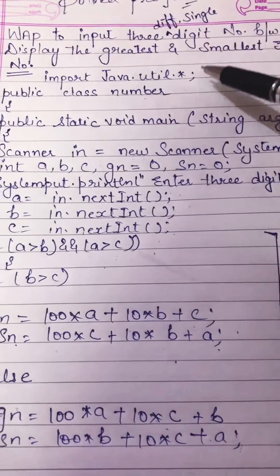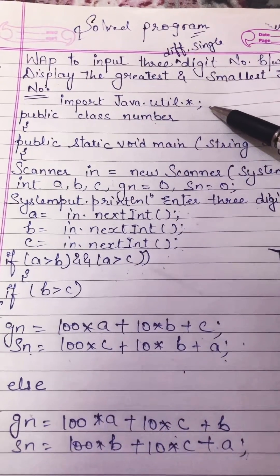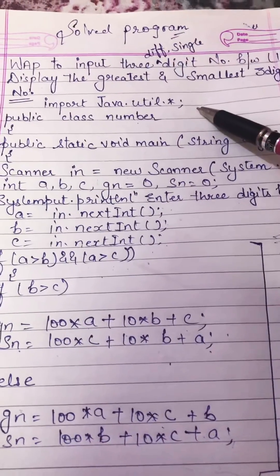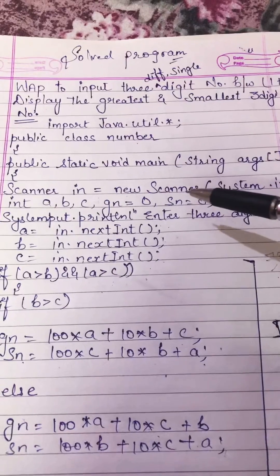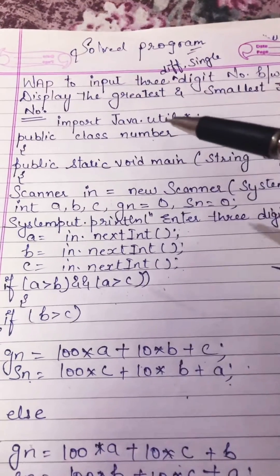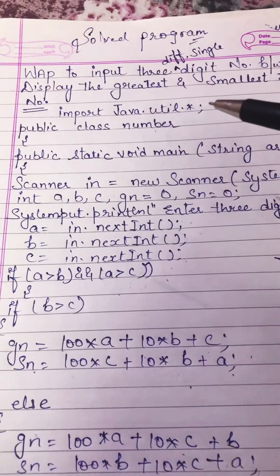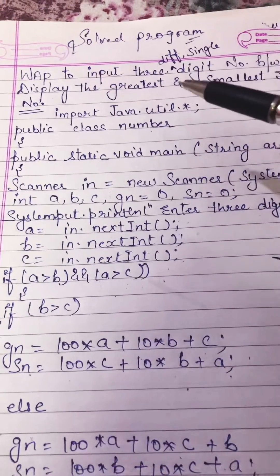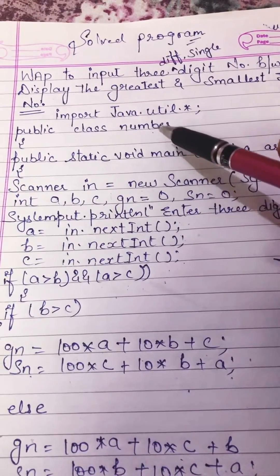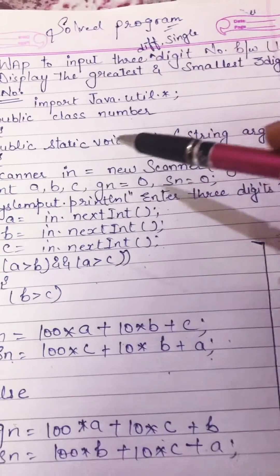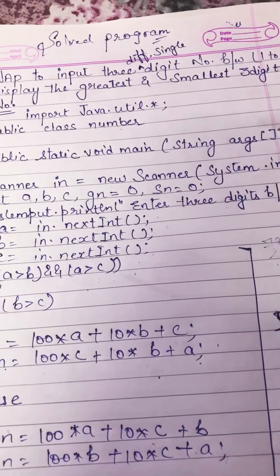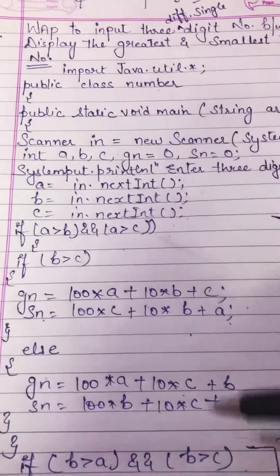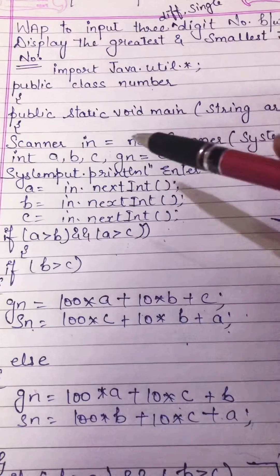We are starting this program by using the package import java.util.*. We are importing this package because we are using a Scanner class. In the second line, public class Number — your class name here is Number, you can take any class name. Then public static void main(String[] args) — the main execution of the program starts from the main function.